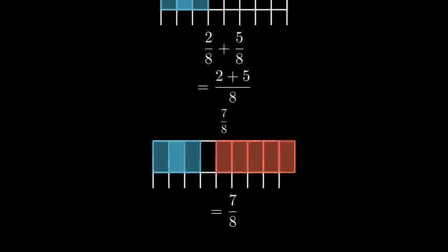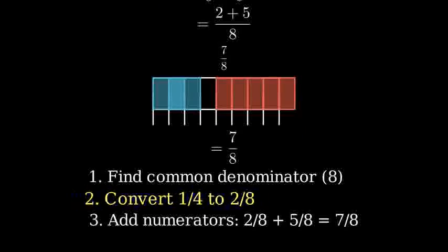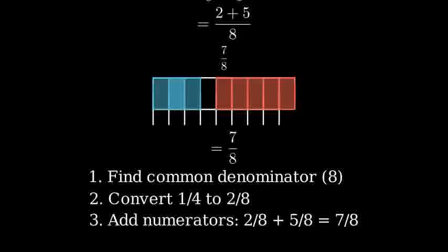Let's review the steps we took. First, we found a common denominator, eight. Then, we converted one-fourth to two-eighths by multiplying by two over two. Finally, we added the numerators while keeping the same denominator to get seven-eighths.